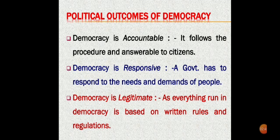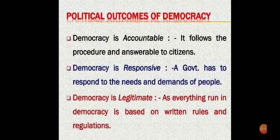Democratic government is legitimate because it is the people's own government. It may be slow and less efficient, but it is the people's government. People wish to be ruled by representatives elected by them. Democracy's ability to generate its own support makes it more legitimate.